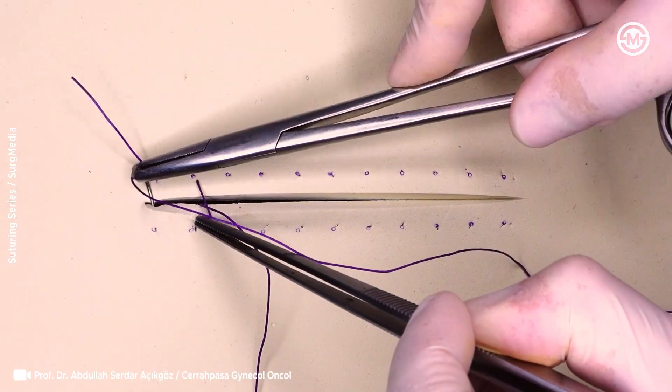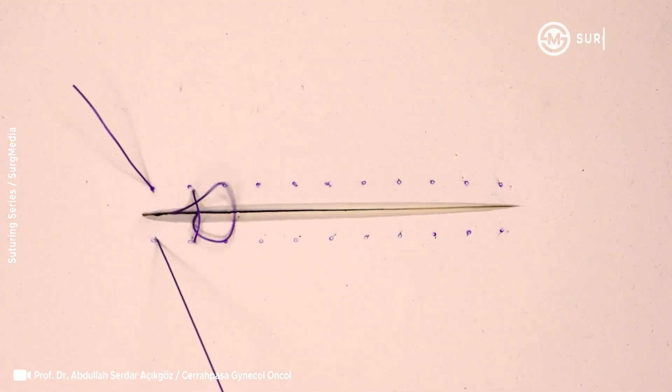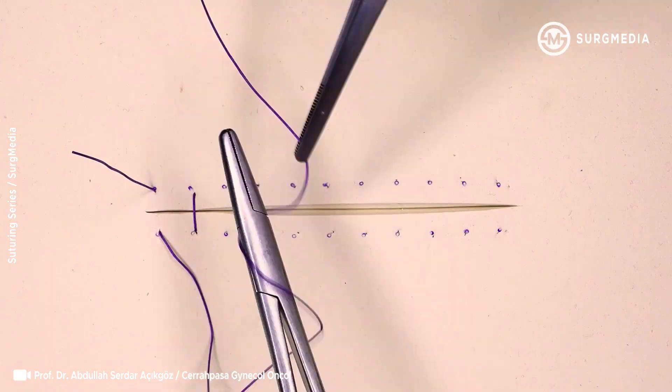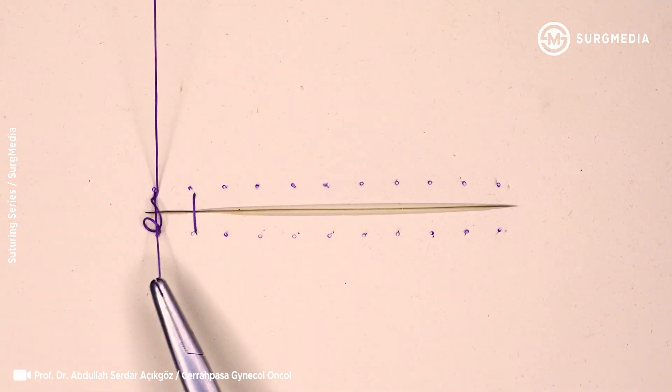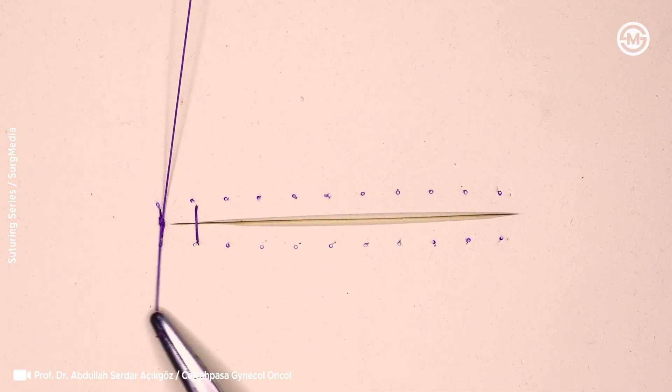To start, the first stitch passes from the outside in, near the edge of the wound. Then, on the opposite side, you place the needle obliquely, about 0.5 to 1 cm below the level of the first stitch, creating a diagonal path across the tissue.